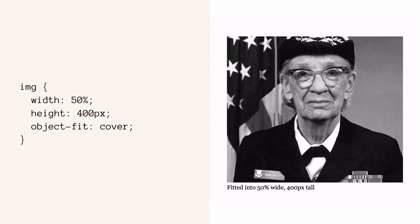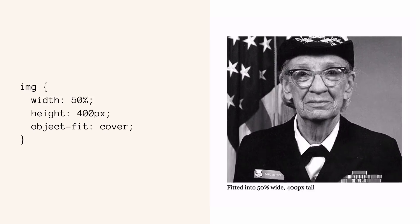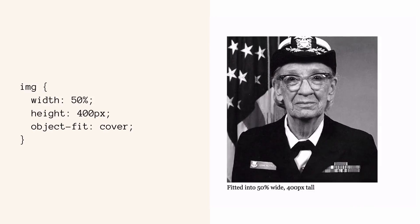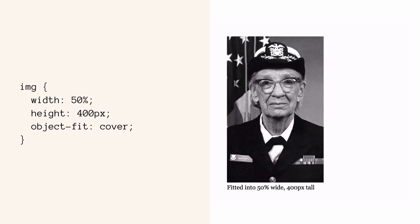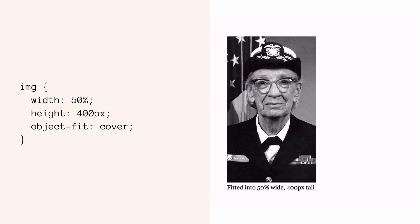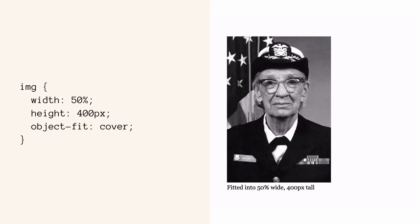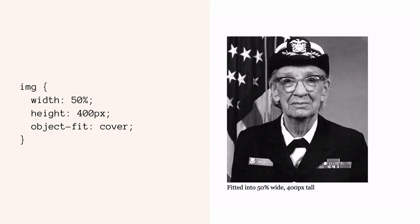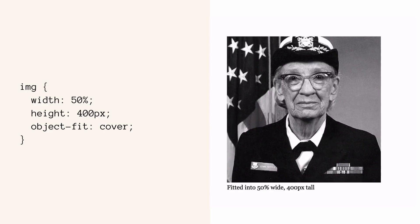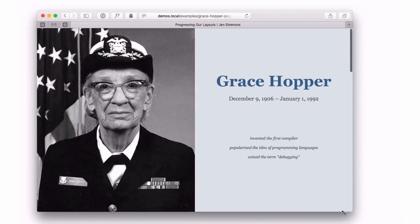Here's the code for this: I've said I want this image to be a width of 50% and a height of 400 pixels, and I apply object-fit: cover to it. And we've got an image that's going to fit in the space we've defined and maintain its aspect ratio.